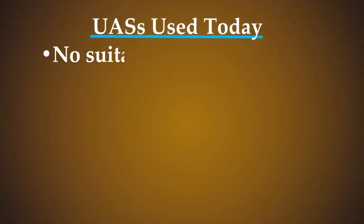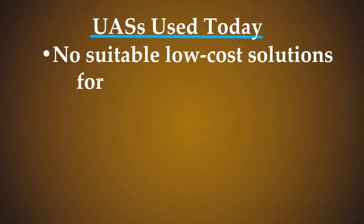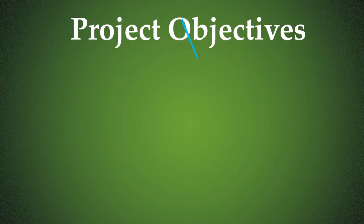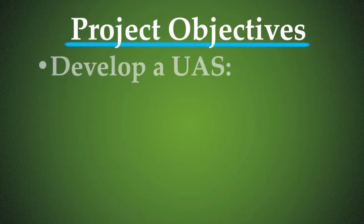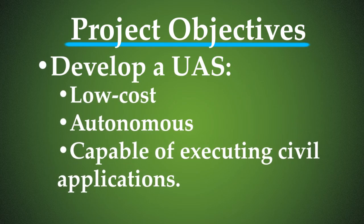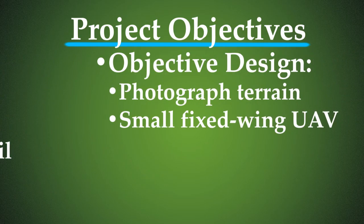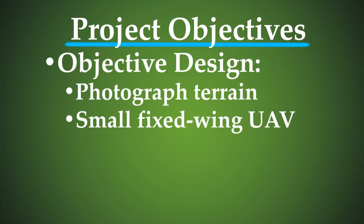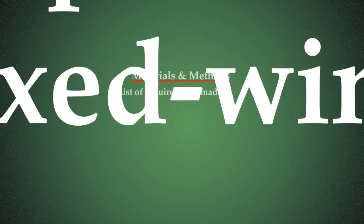I researched current UASs in use and found no affordable solution suitable for civilian drone applications. The objective of the project was to design and develop a low-cost, autonomous unmanned aerial system, AUAS, capable of meeting the needs of civilian applications. The system was designed specifically for photographing interest areas for survey via a small, fixed-wing unmanned aerial vehicle.